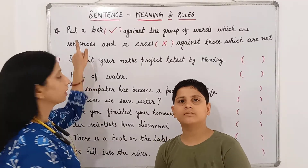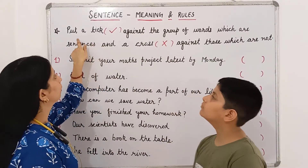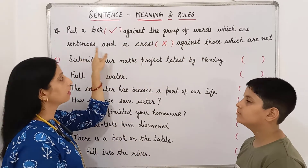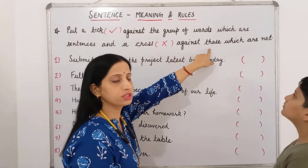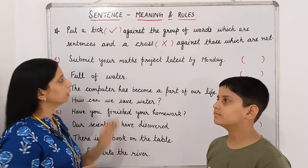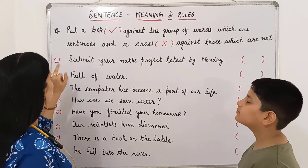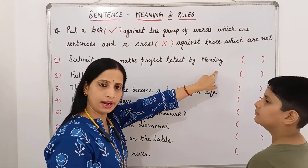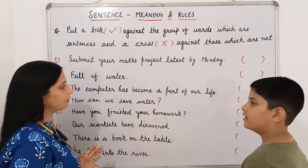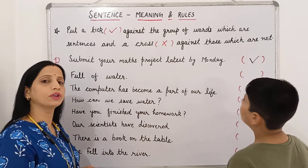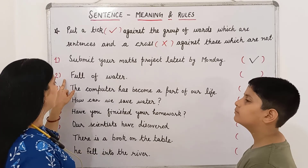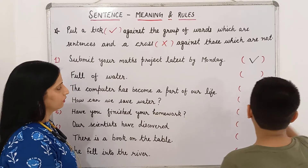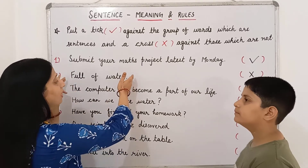The question is: put a tick against the group of words which are sentences and a cross against those which are not sentences. The first one is: 'Submit your maths project latest by Monday.' Is it a sentence? Yes. So here we will put a tick. The second is: 'Full of water.' Is it a sentence? No. So we will put a cross here because it is only a phrase — we are not getting complete information.